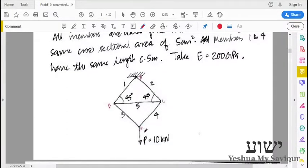So you have to find the displacement at the point of application of load. The structure dimensions are given: members 1, 2, 3, and 4 have lengths of 0.5 meters. The angles are also given so you can find the lengths.